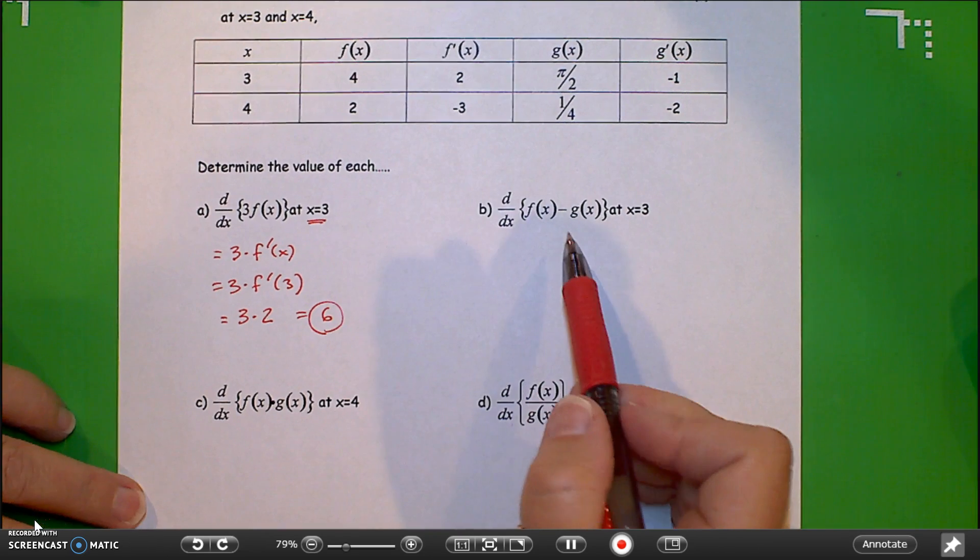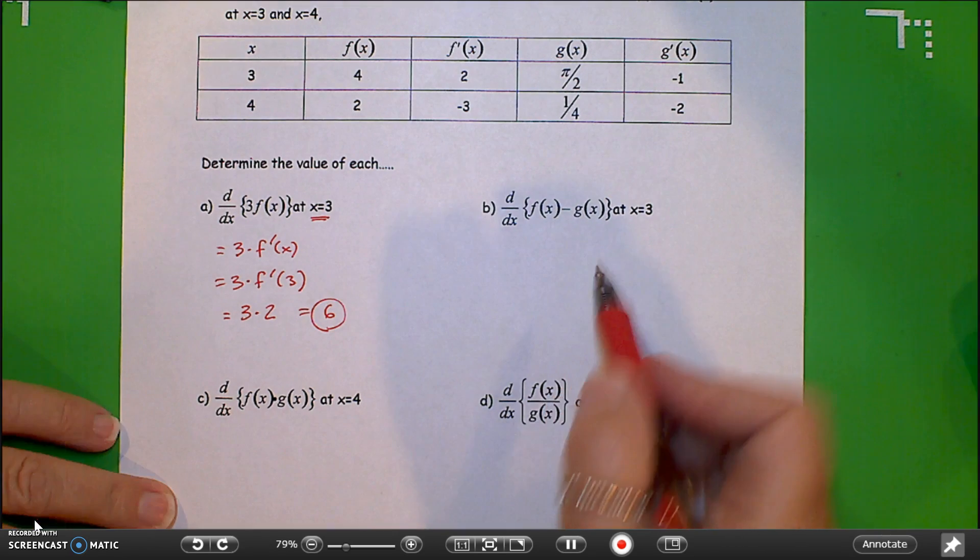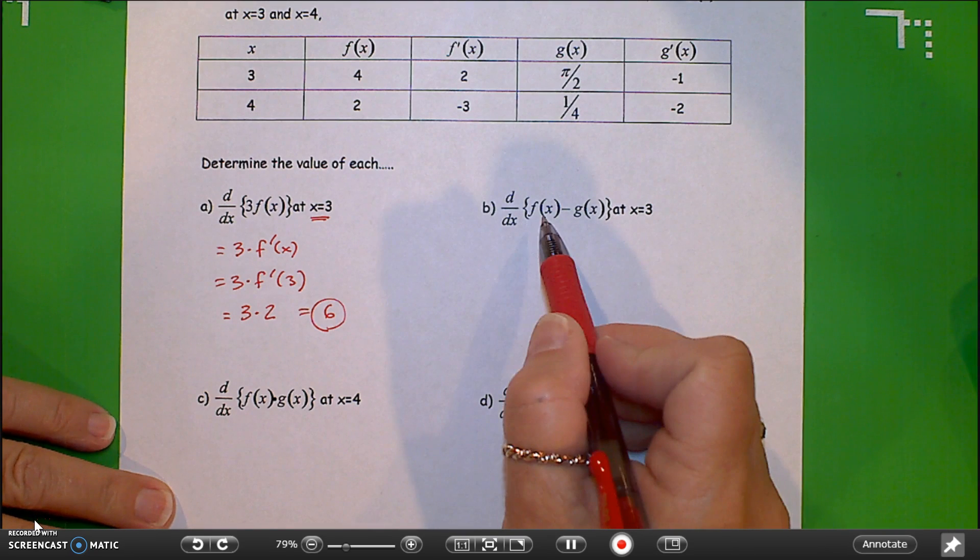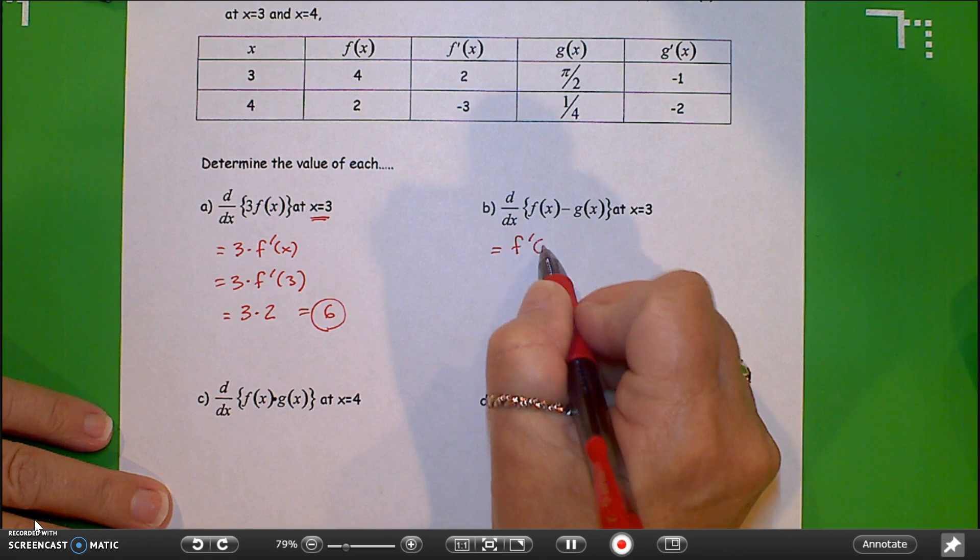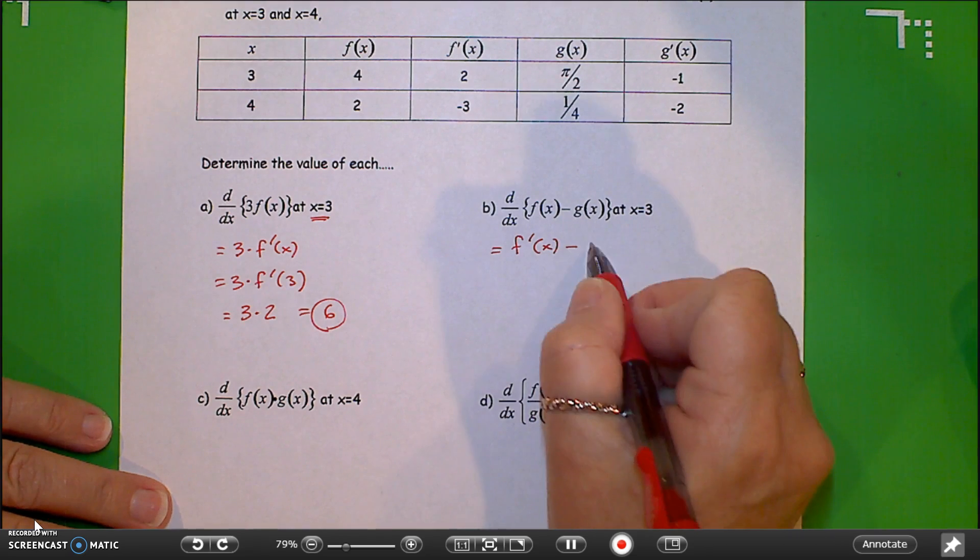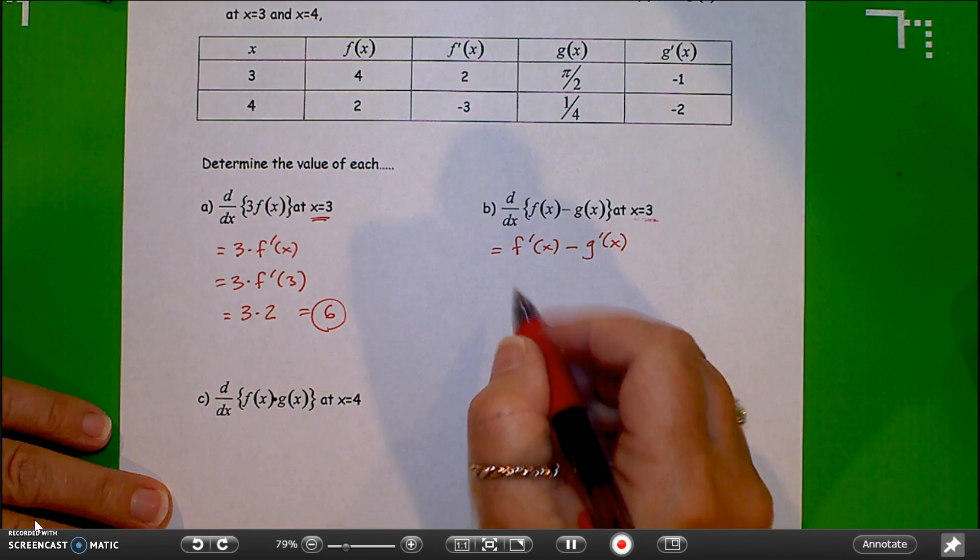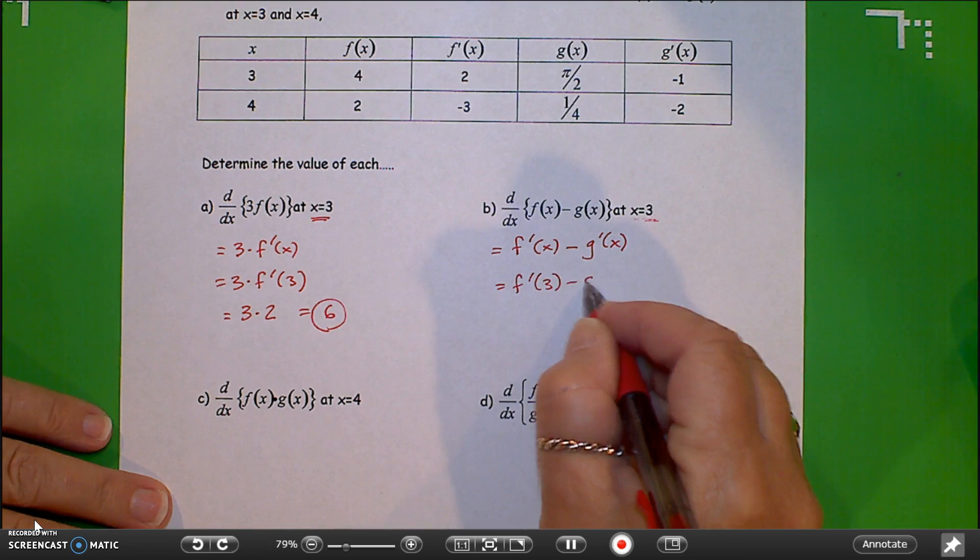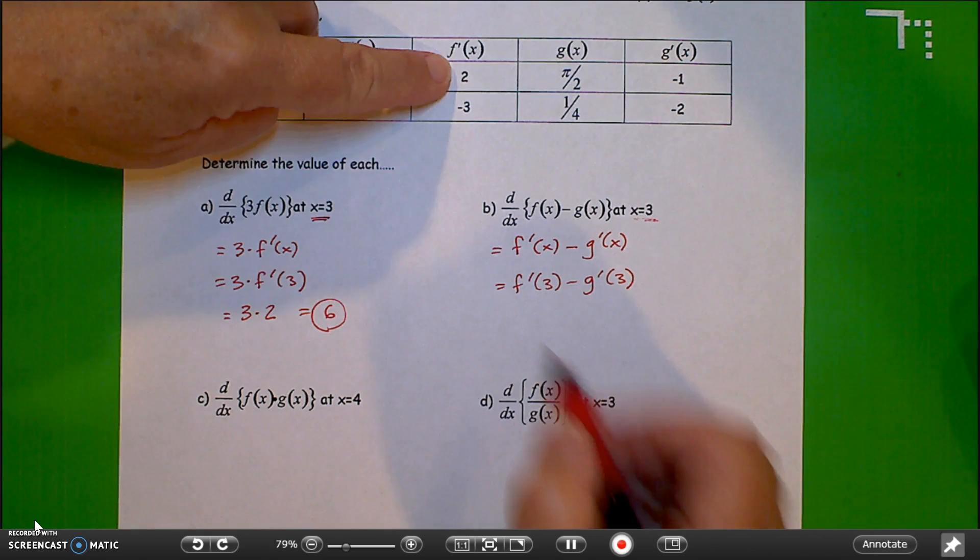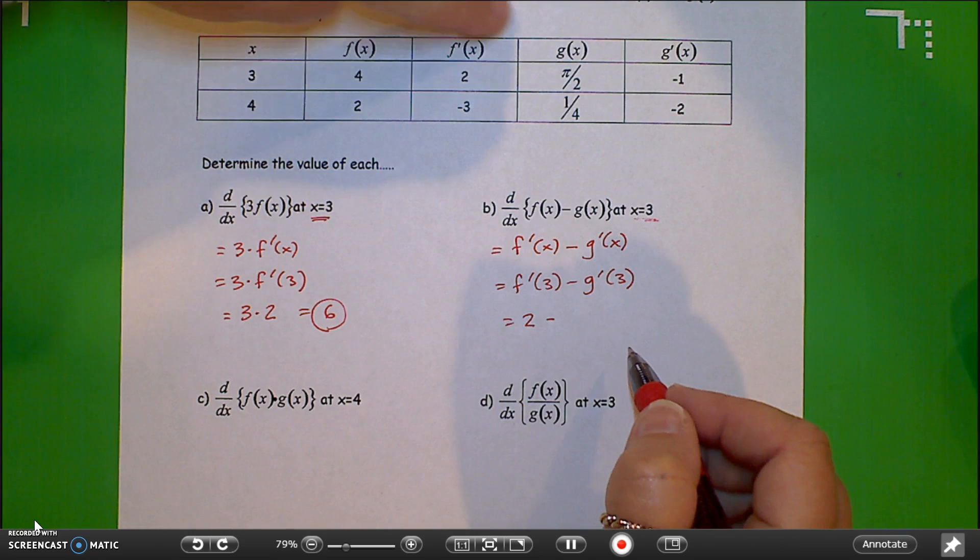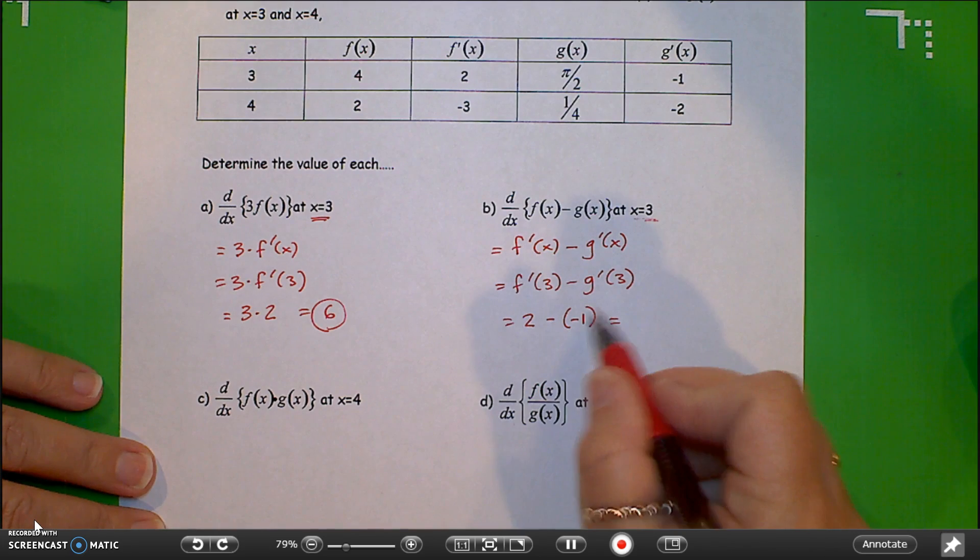Part b, the rule here, we've got f of x minus g of x. So this is just a difference. Actually, to get the derivative of those two things together, we can take the derivative of each of them individually. So this derivative would be just simply the derivative of f of x, we're going to denote with f prime of x, minus the derivative of g of x, we'll denote with g prime of x. Again, this is at x equals 3, so we'll substitute that in, f prime at 3, minus g prime at 3, which is equal to 2, minus negative 1. Watch your signs, that is 2 plus 1 or 3.